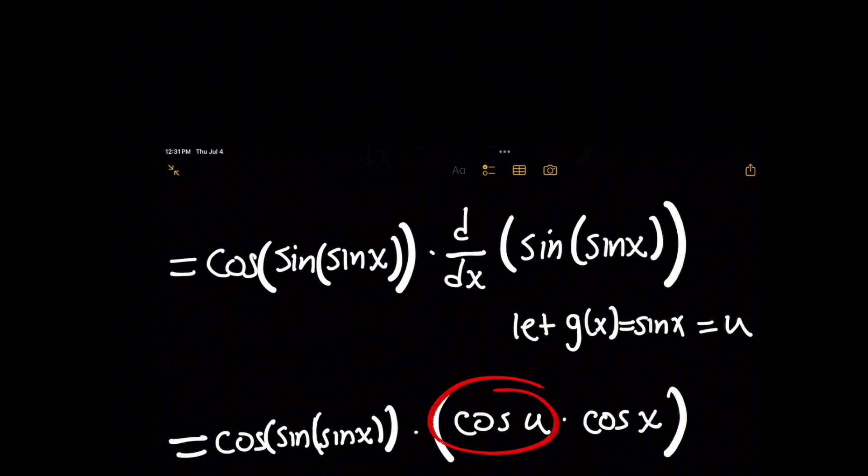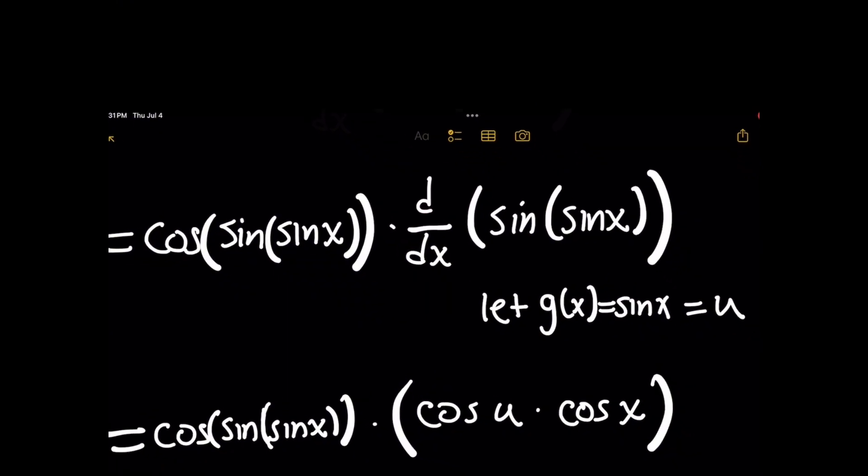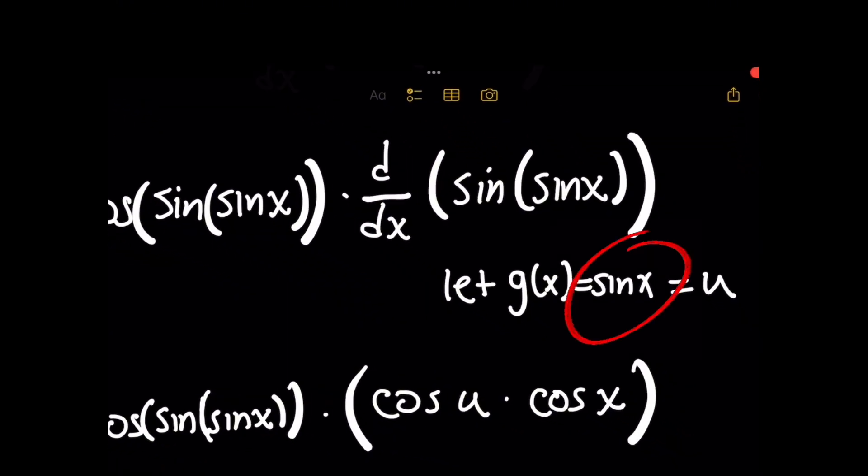for the chain rule here, we start by the derivative of the outer function, which is now a sine of u problem once again, times the derivative of what we called u, which is sine of x, giving you a result, which is cosine of x.